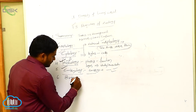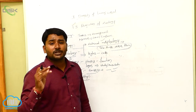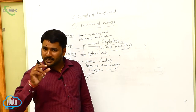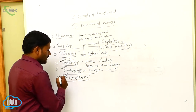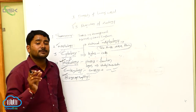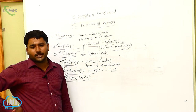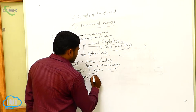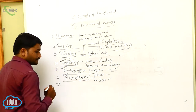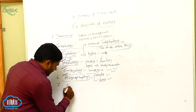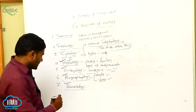Biogeography means the distribution of plants and animals on the earth. The study of distribution of plants and animals on the earth is called biogeography. The distribution of plants is studied under phytogeography, while the distribution of animals is studied under zoogeography. Together these form biogeography.